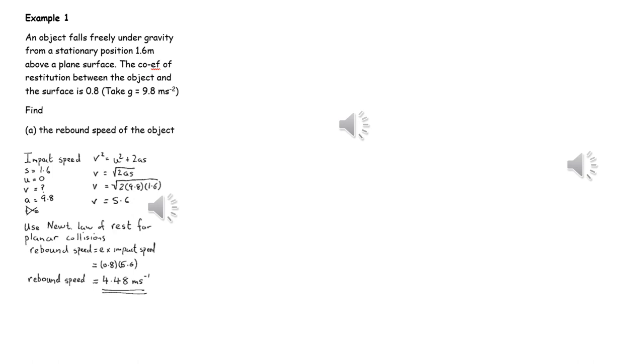To find the rebound speed, we first need to work out the speed of impact by applying SUVAT and using the fact that the acceleration will be positive g. Once the object hits the ground, we can use Newton's experimental law and get that v equals e u, and this will enable us to work out the rebound speed.